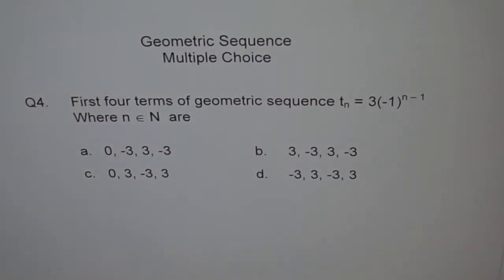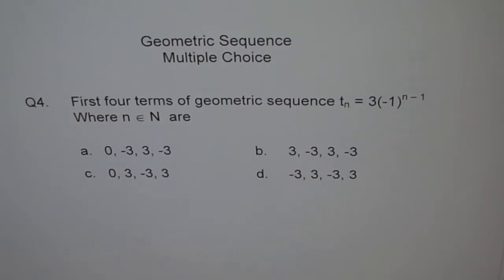Here is question 4, multiple choice, geometric sequence. The first 4 terms of geometric sequence Tn equals 3 times negative 1 to the power of n minus 1, where n belongs to the set of natural numbers. You have to select one of those choices. Try to get your answer and then move on with this video.